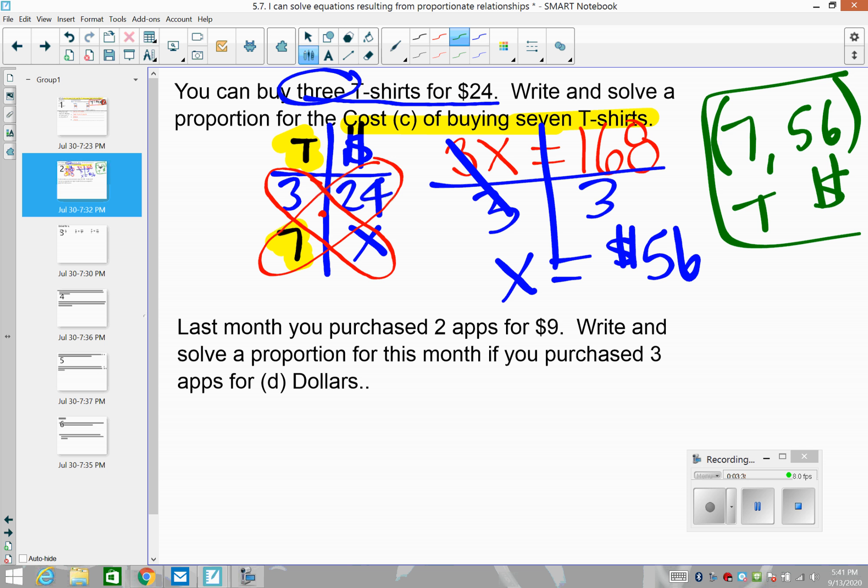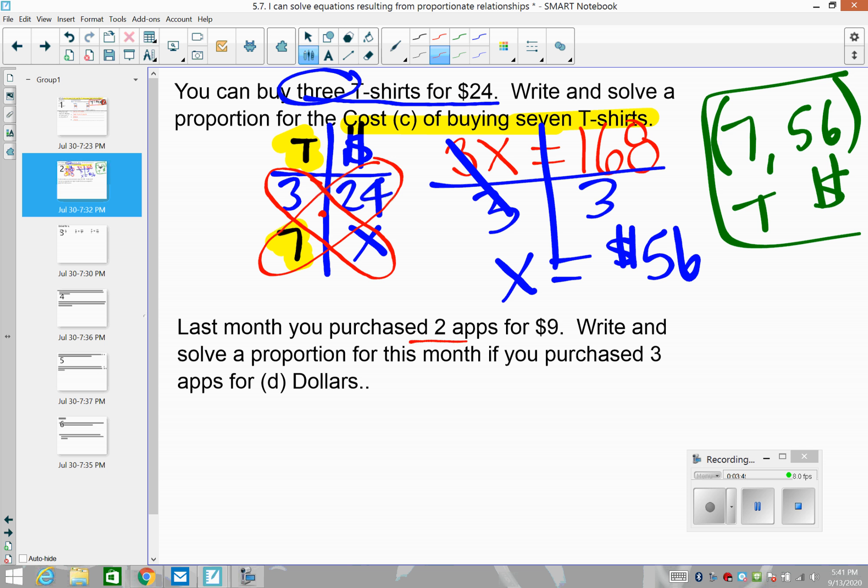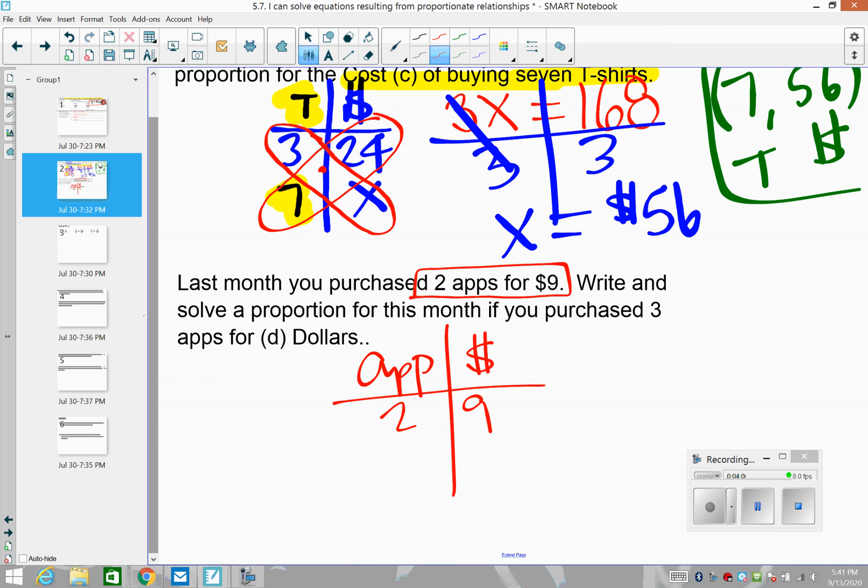So the next one, last month you purchased two apps for $9. So I'm hearing apps and I'm hearing dollars, two apps, $9. Write and solve a proportion for this month if you purchase three apps, so we're going to put the three in the app section, just like we did up above.